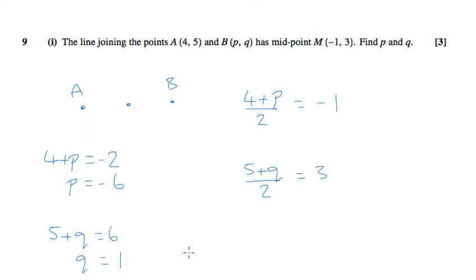So therefore, P and Q—sorry, not M—B. For B, P is negative 6, and Q is 1.